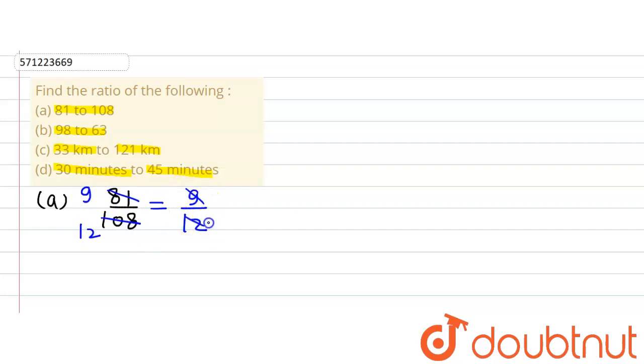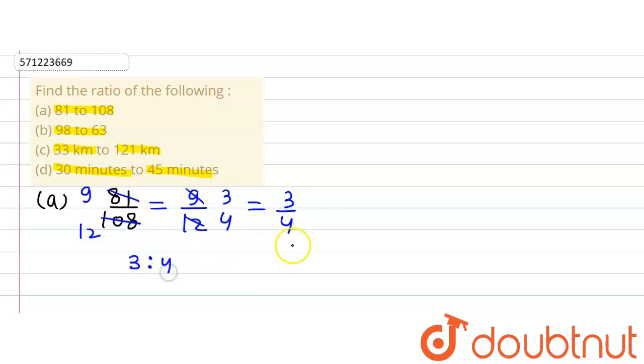Again, this will be divisible by 3, so we will have 3 divided by 4. So the ratio is 3 ratio 4. Now let's move to Part B.